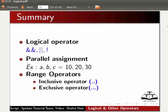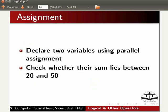This brings us to the end of this spoken tutorial. In this tutorial, we have learned logical operators — double ampersand (&&), double pipe (||), and exclamation mark (!) operators — as well as parallel assignment (e.g., `a, b, c = 10, 20, 30`) and range operators, including the inclusive and exclusive operators. As an assignment, declare two variables using parallel assignment and check whether their sum lies between 20 and 50.